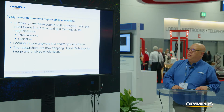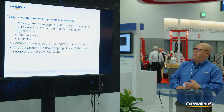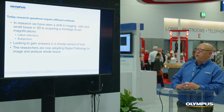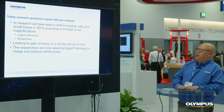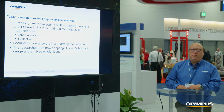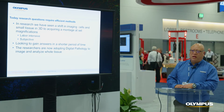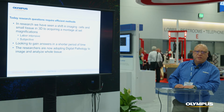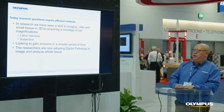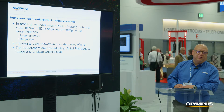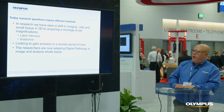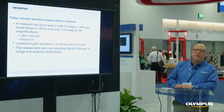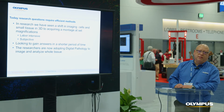Today, researchers have seen a shift from imaging just cells and individual patch clamping in tissues and then acquiring a 3D montage of a set of magnifications. The problem with the current method in most labs is that it's very labor-intensive and can be very subjective when stitching manually. Researchers are looking to gain answers in a short period of time, and they are now adopting digital pathology to capture the image and do a whole slide analysis on the images itself.